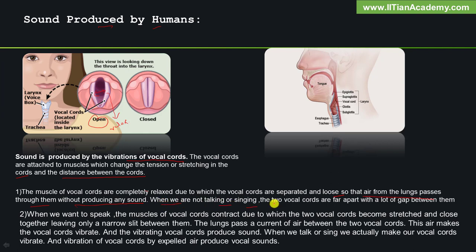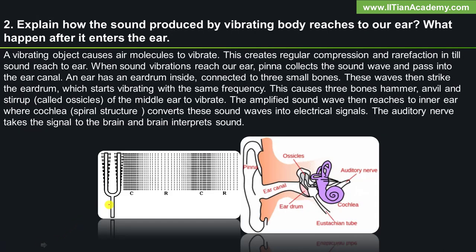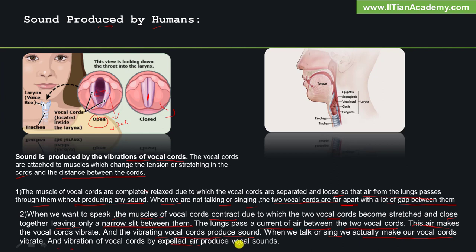When we are not talking or singing, the two vocal chords are far apart with a lot of gap between them. In the vocal chord closed case, when we want to speak, the muscles of vocal chords contract, making the two vocal chords become stretched and close together, leaving only a narrow slit. The lungs pass a current of air between the two vocal chords. This air makes the vocal chords vibrate, and the vibrating vocal chords produce sound. When we talk or sing, we make our vocal chords vibrate, and vibration of vocal chords by expelled air produces vocal sounds.